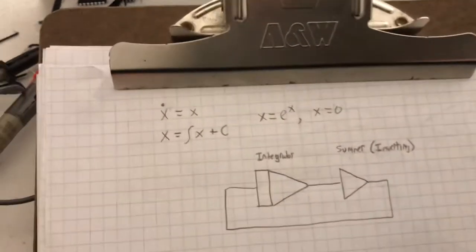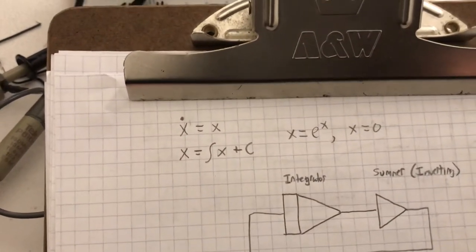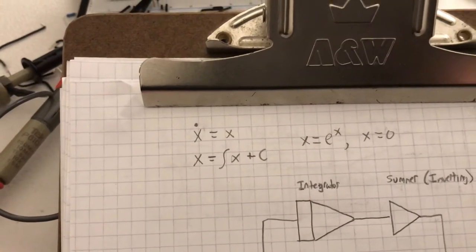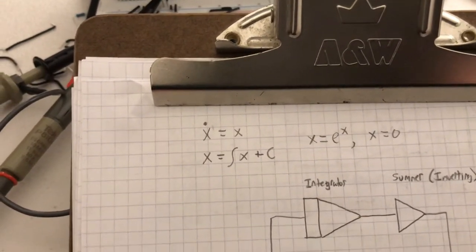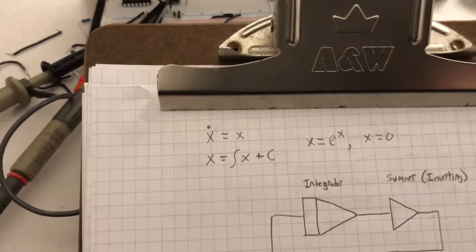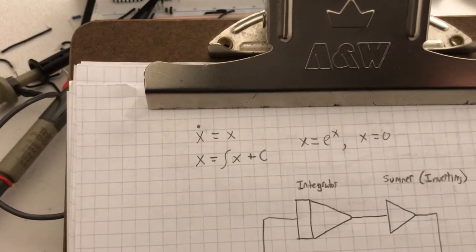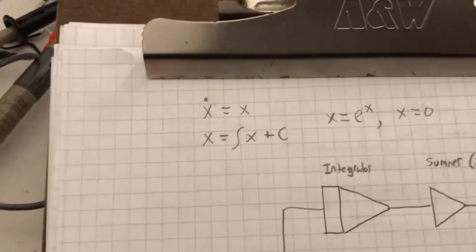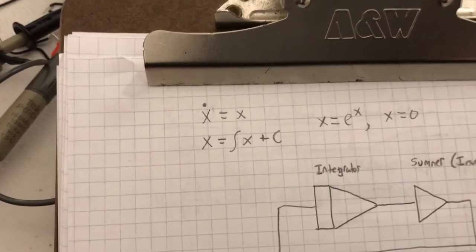You see I have X dot equals X, or the derivative of X is equal to X. The derivative of X with respect to time is equal to X, where X is a function of some kind.